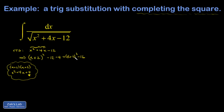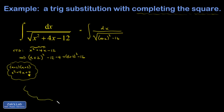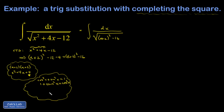Now you can see that I have a variable thing squared minus a constant, and we're going to be able to fit the form of a trig identity with this. So I have the integral dx over square root of quantity (x+2) squared minus 16. What trig identity do I want to use? I have a variable thing squared minus a constant. You basically just have two trig identities to choose from. I'd rather work with tangent and secant.